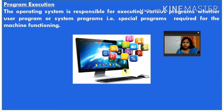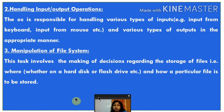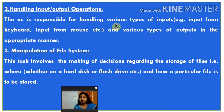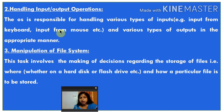All the programs we use in a computer are managed by the operating system. The second function is handling input and output operations. The operating system is responsible for handling various types of inputs — for example, input from keyboard, mouse — and various types of output in the appropriate manner, such as output to monitor or printer. Whatever devices we use to give instructions, that is managed by the operating system.